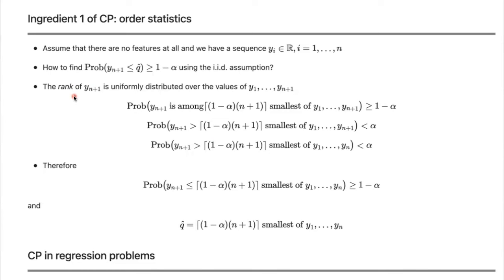Another thing to talk about is exchangeability. Exchangeability is something we really need to use conformal prediction, and it is a weaker assumption than IID. If we have n+1 values Y1 to Y_{n+1}, they are exchangeable if their joint distribution is unchanged under permutations. Sigma here refers to all possible permutations — if we permute these values without caring about order, their joint distribution remains the same.